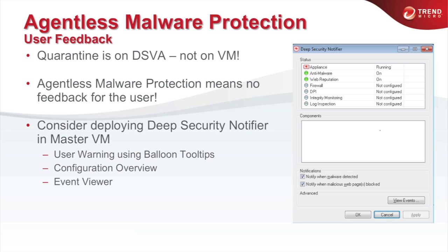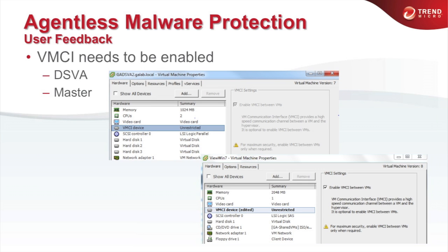To address this situation, Trend Micro offers a notifier — a piece of software installed into the actual virtual machine that notifies the user with a balloon tooltip if malware has been found or a malicious website has been accessed. The notifier uses VMCI functionality to provide notifications, so make sure the VMCI API is enabled on both the virtual machine and the Deep Security virtual appliance. You should consider installing the notifier in your master image so all spawned VMs will automatically have it available.